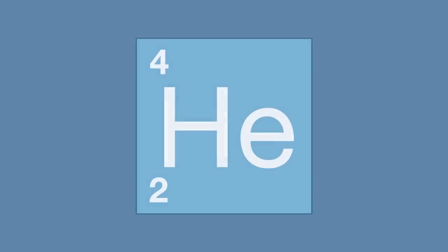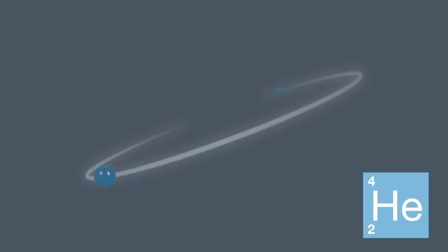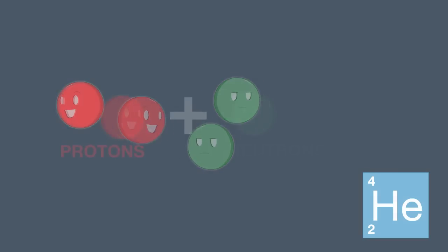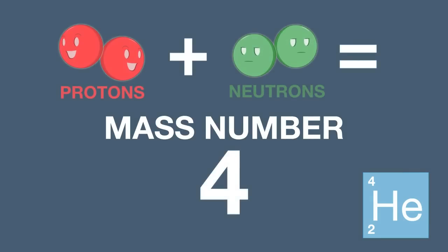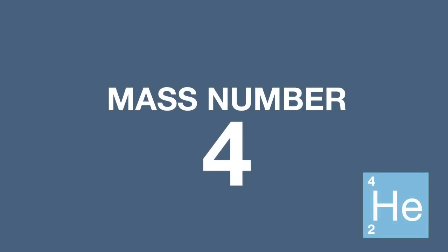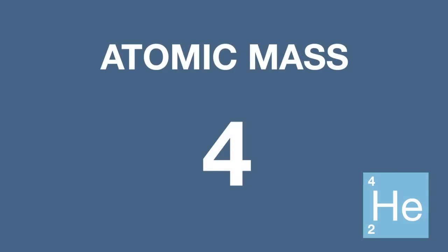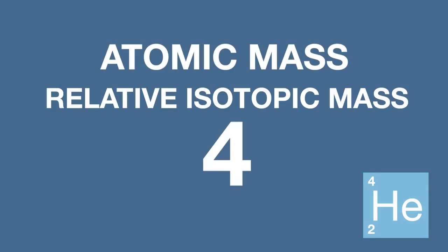As a quick reminder, here is a helium atom. It has two protons and two neutrons in the nucleus. This gives it a mass number of four. This actually means it has an atomic mass, or relative isotopic mass, of four.